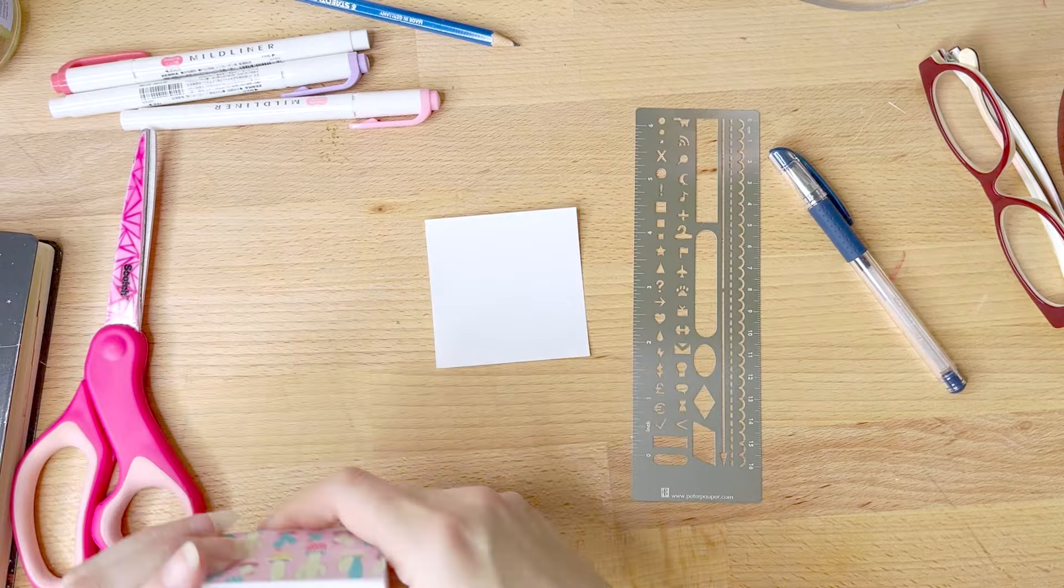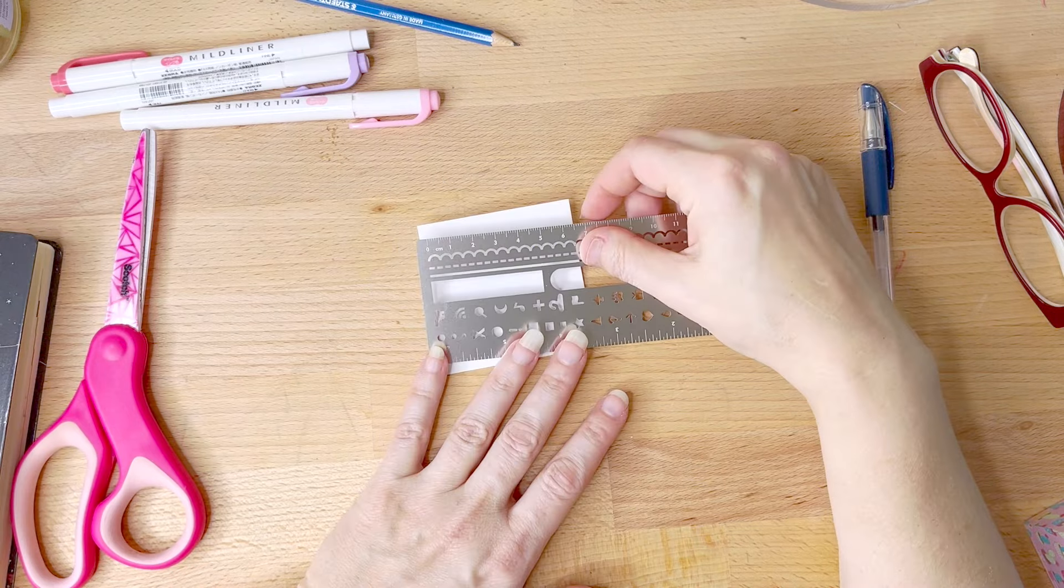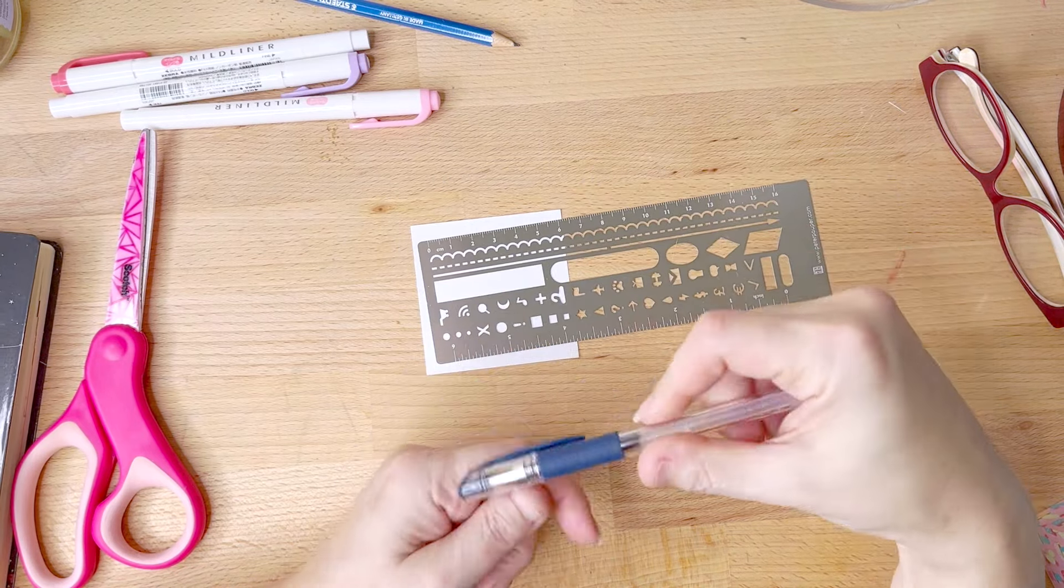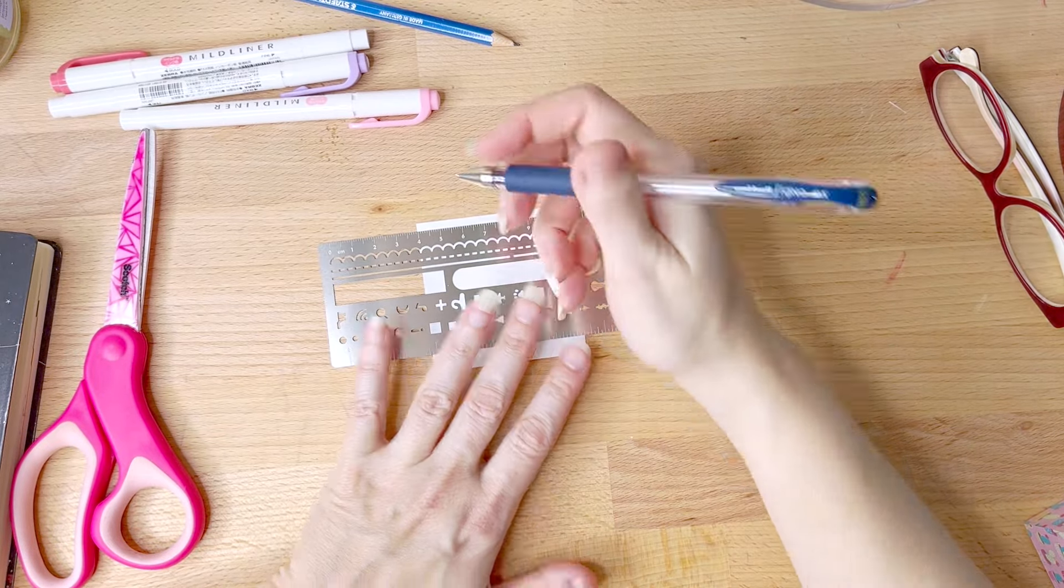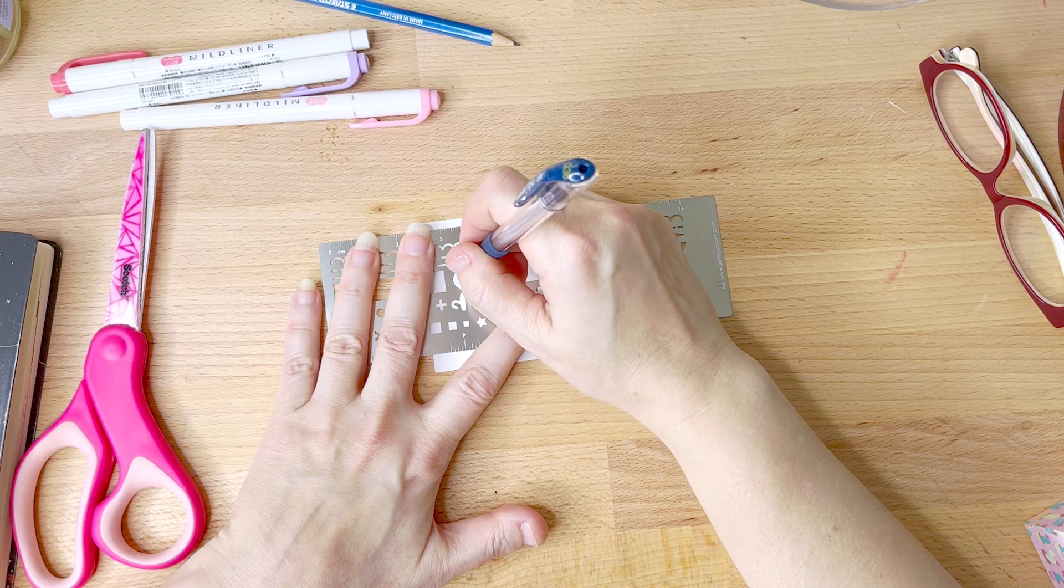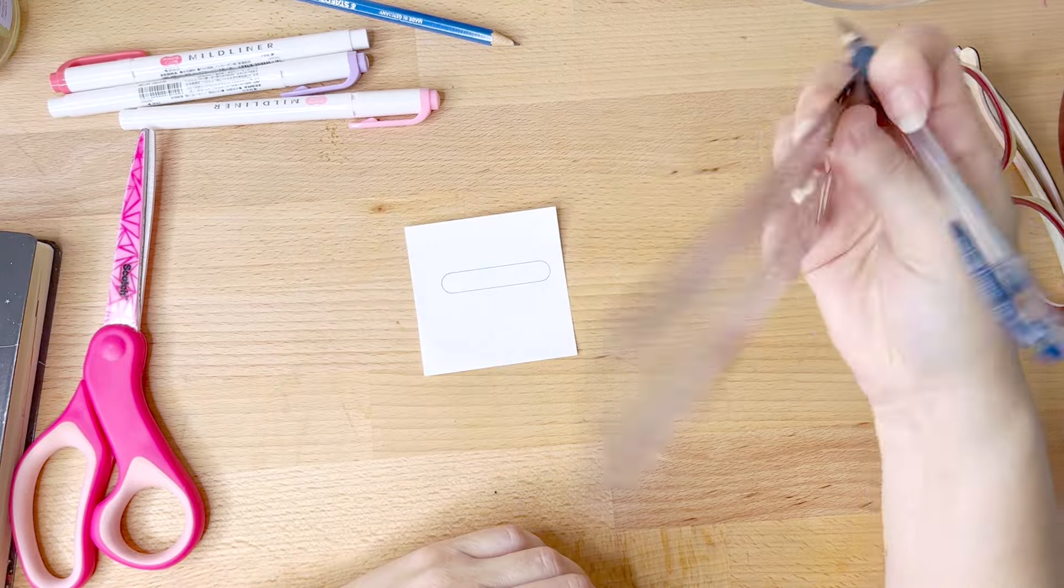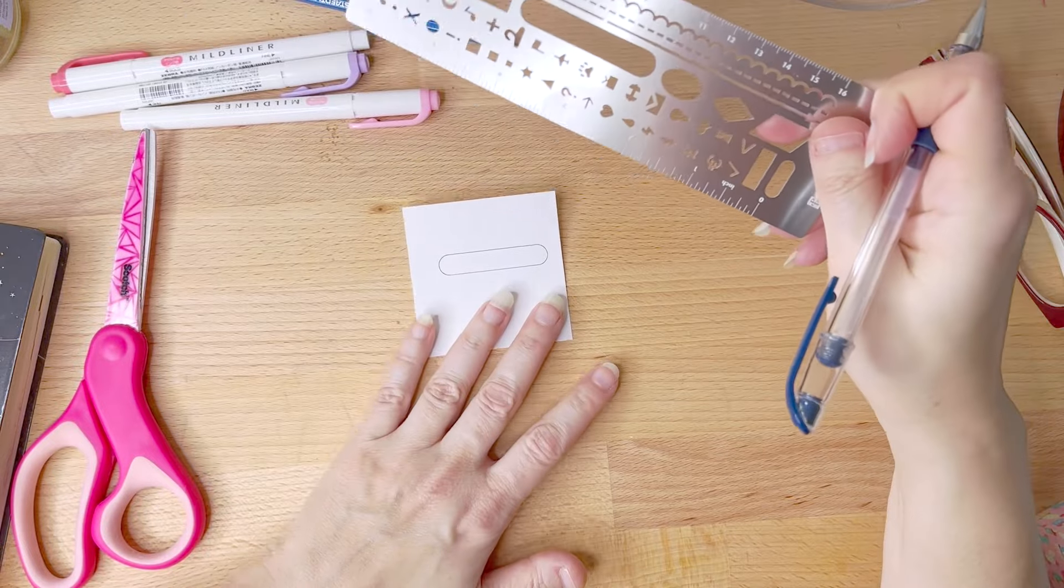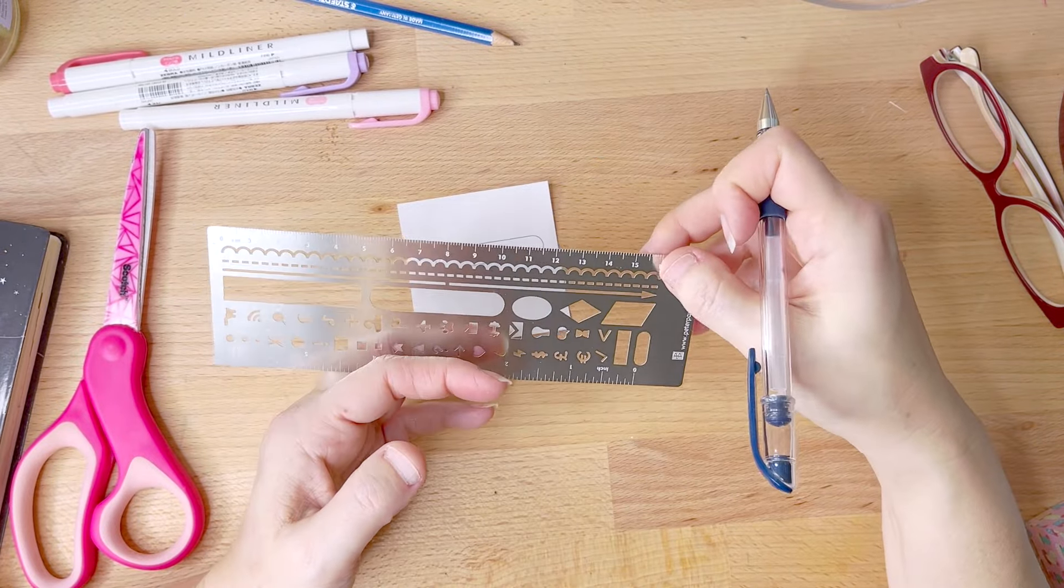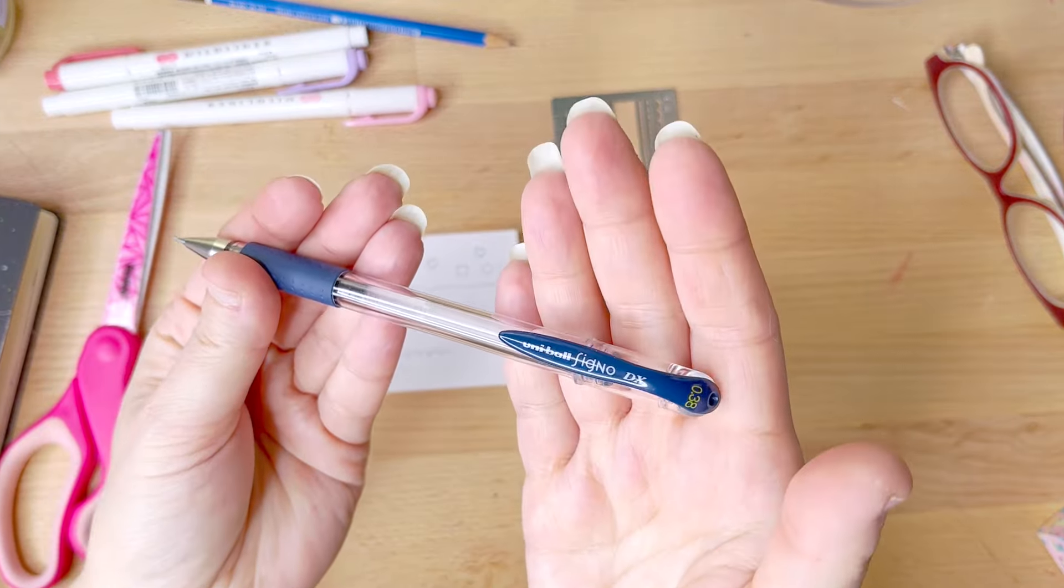So for my first test I'm going to be trying this El Cheapo Target dollar section notepad paper and I am using my Uniball Signo DX in this and it is a 0.38. And I really like these pens. I feel like they roll really nice on all paper so this is pretty much my go-to pen for when I'm journaling. So I thought it would be best to try it with this. And here's a quick close-up of the pen.